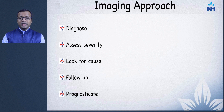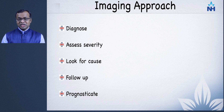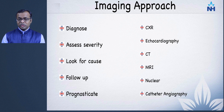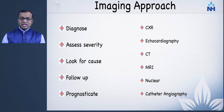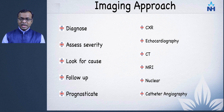All along, imaging guides prognosis — helping identify which patients are likely to do better and which will need more intensive therapy. Different modalities are available, starting with chest radiograph and echocardiography, done in almost every patient with suspected or known pulmonary hypertension. I'll focus today on cross-sectional imaging, especially the CT components.